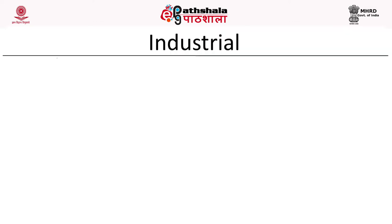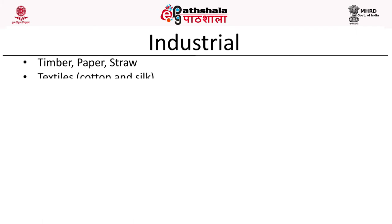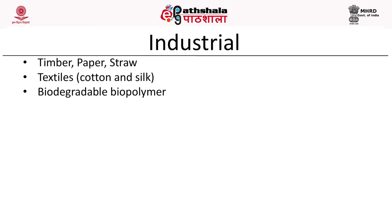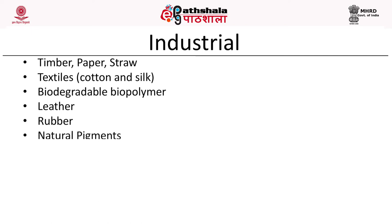There are several industry products as well. Examples include timber, paper, straw — all coming from plant resources, especially lignin-based woody plants. Textiles: cotton and silk come from global biodiversity. Biodegradable biopolymers, leather, rubber, natural pigments, anti-fouling paints, glues, and various jewelry — for example, ivory, pearl from pearl oysters, ambergris from whales, perfumes such as musk, essential oils, sandalwood, etc. — all coming from global biodiversity.